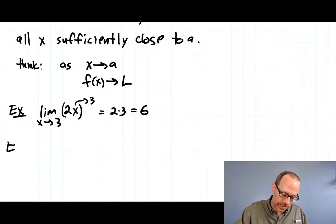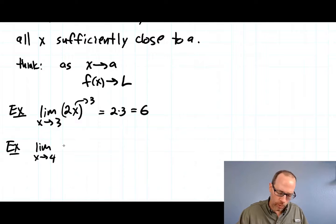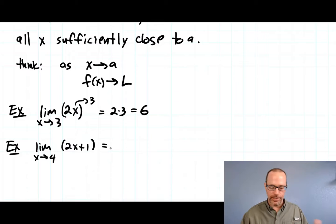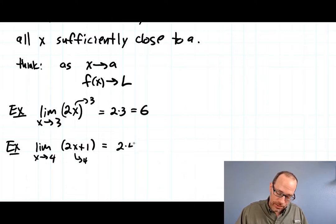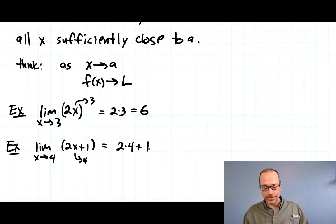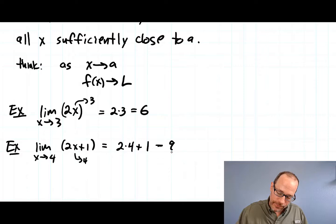Here's another example: the limit as x goes to 4 of 2x plus 1. Think of this process—x is heading in, getting closer to 4. If x is getting close to 4, 2x is getting close to 2 times 4, and the 1 is already at 1. So the answer is 9.